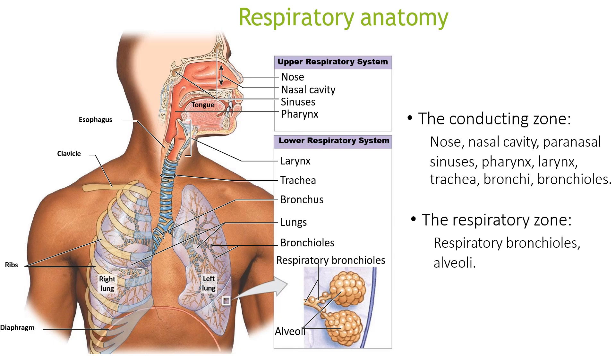In the upper respiratory system, we have the nose, nasal cavity, sinuses, and pharynx. In the lower respiratory system, we have the larynx, trachea, bronchus, lungs, bronchioles, respiratory bronchioles, and alveoli.